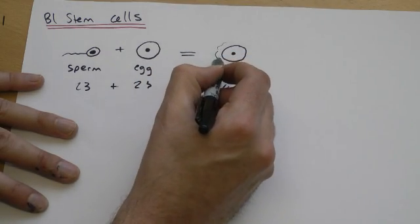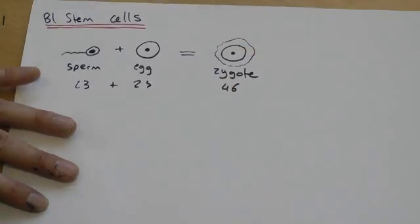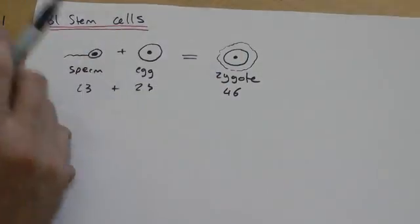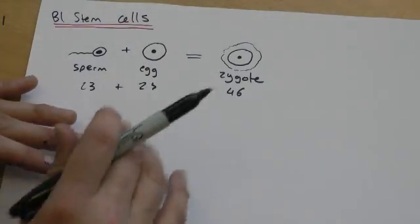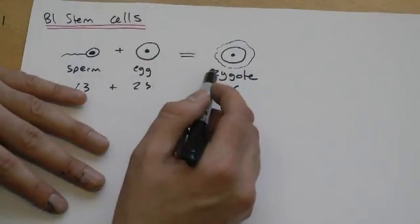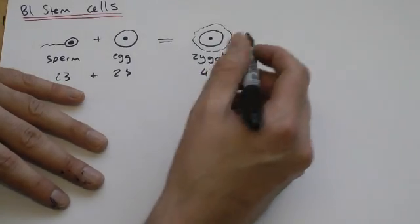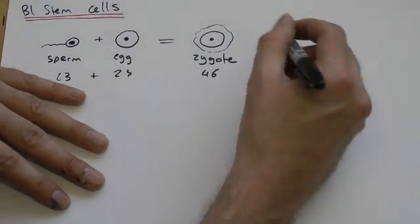In fact, this zygote is surrounded by a whole host of other cells, something called a zona, which is a bit like an eggshell, I suppose. But we're going to ignore that for the time being. The zygote then starts to go through several stages of cell division, or mitosis.